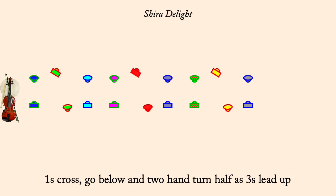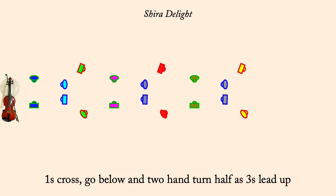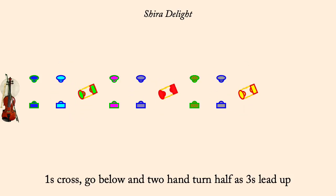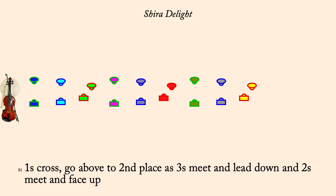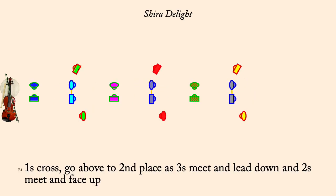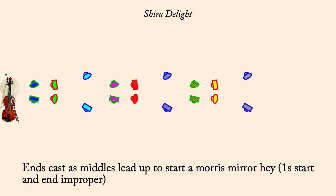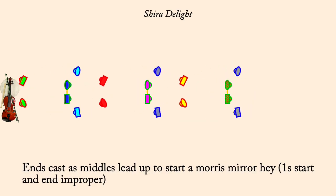Ones cross, go above, as threes lead down. End couple's cast, middle leads up, into a Morris mirror hay.